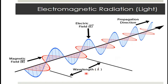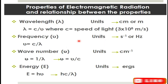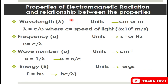One of the important properties is wavelength. Wavelength is represented by the letter lambda, and wavelength is the distance between two adjacent troughs or the distance between two adjacent crests.